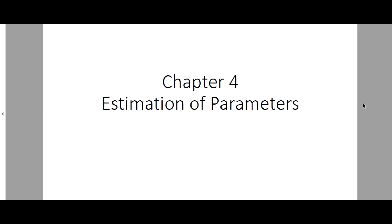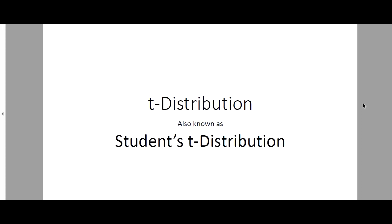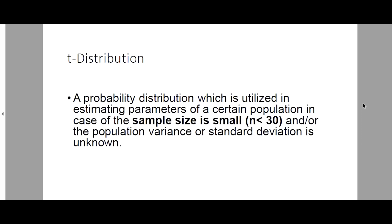Chapter 4: Estimation of Parameters. Before we go to the main topic, I'll be discussing first the T-distribution, also known as the Student's T-distribution. It is a probability distribution utilized in estimating parameters of a certain population when the sample size is small — that is, n must be less than 30 — and/or the population variance or standard deviation is unknown.